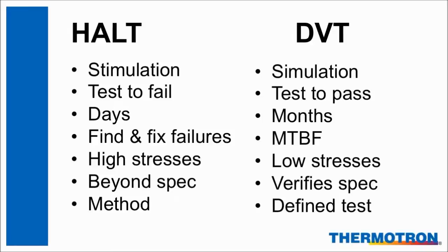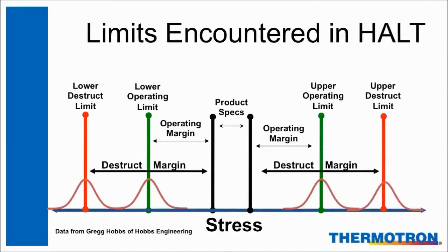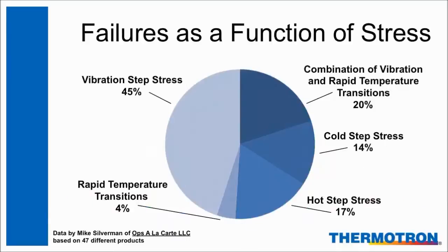This graph shows a narrow range in the center, which signifies the product's normal use specifications. This is the range where the manufacturer warrants that the product will work. Outside of the product specifications are the upper and lower operating limits, when the product will stop working. If the stress is backed away from these limits, the product will begin to work again — it was not broken, just inoperable. The final limits are the red brackets that signify the destruct limits. These are the points which, when passed, the product breaks and will not work again until it is fixed. This pie chart is a summary of product failures from 47 different HALT tests done on a variety of different products. It shows that a vast majority of failures are found during vibration step stressing and the combination of temperature and vibration phases.